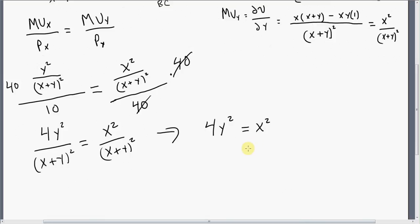And if we take the square root of both sides, just solving for X, taking the square root of both sides, X will equal 2Y.